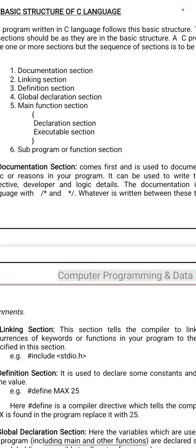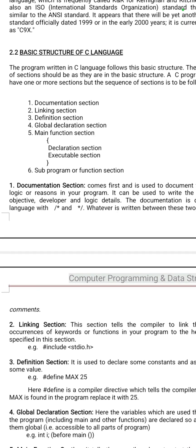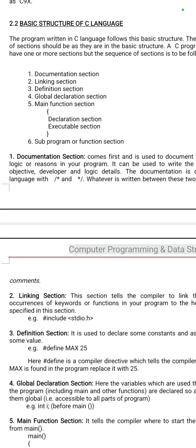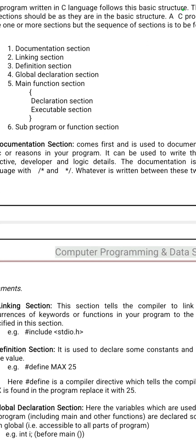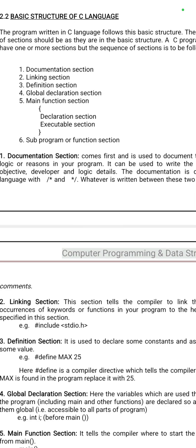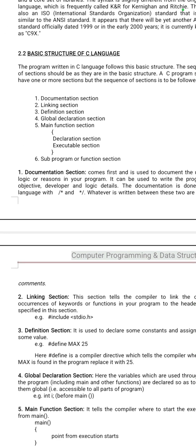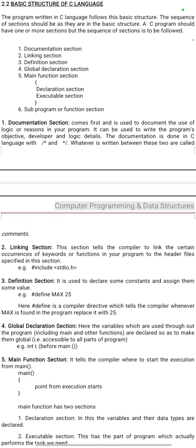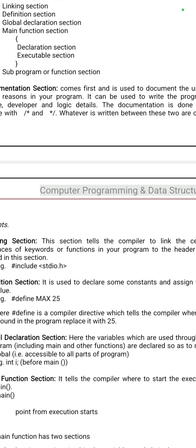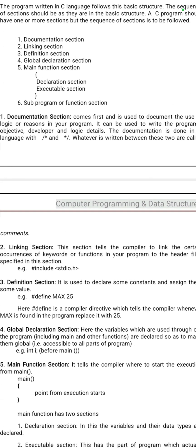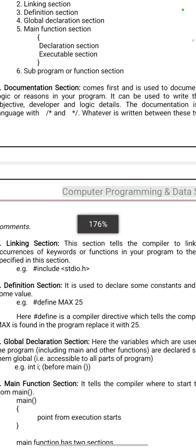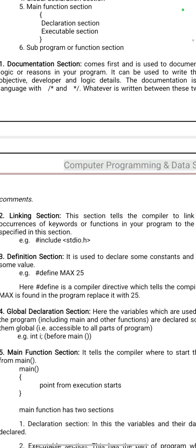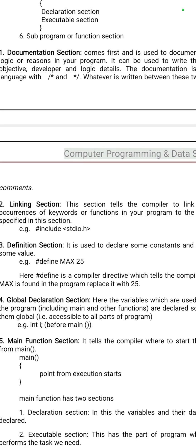In the documentation section, these are the commenting lines — slash star and star slash are the commenting lines in C language. In the linking section, we have to write hash include stdio.h. This is called the linking section.